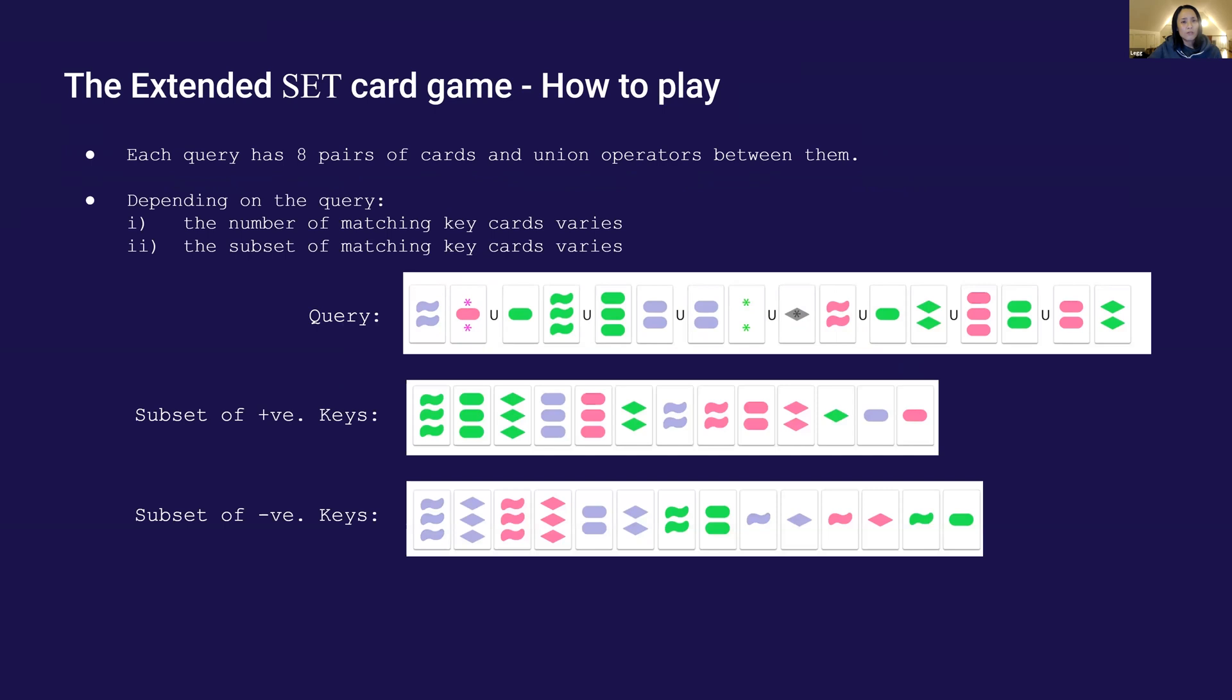Each query has eight pairs of cards and set union operators between them. Depending on the query, the matching subsets of keys and its size vary. This particular query returns 13 matching positive keys. A different query may return a different smaller or larger subset of keys, such as 3 or 21.